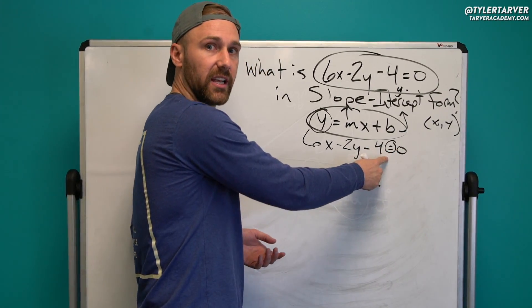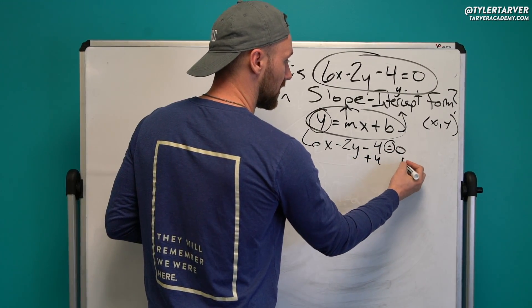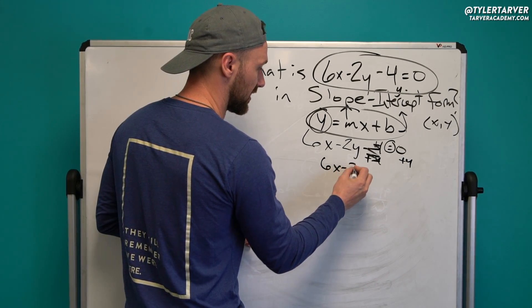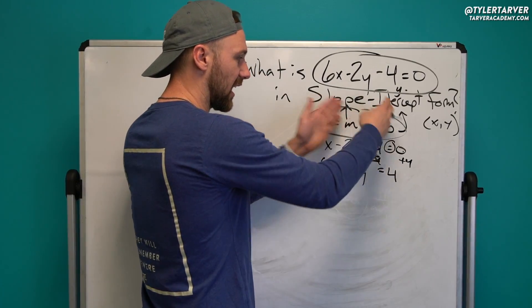Remember, to go across an equals sign, you've got to do the opposite. So instead of minus 4, I want to add 4 to both sides. That's going to cancel that out. So now it's 6x minus 2y equals positive 4. Zero plus 4 is 4. Keep everything in order.